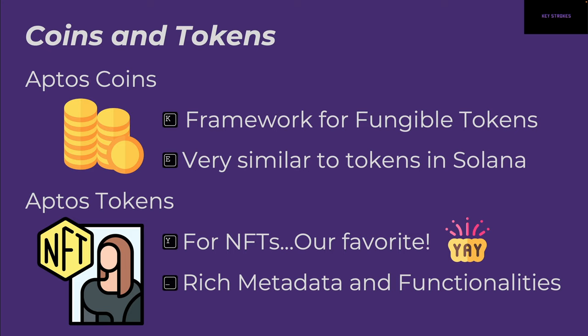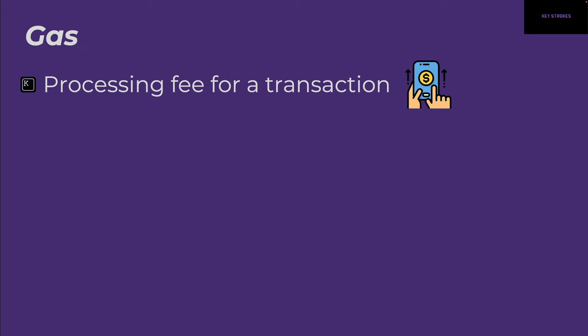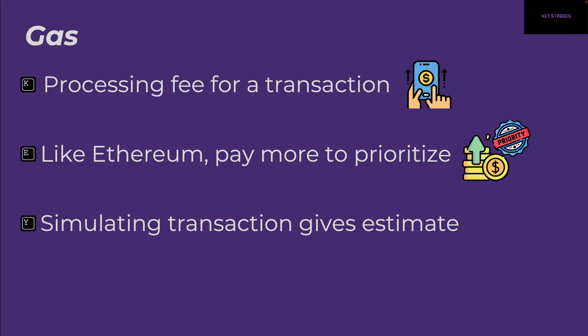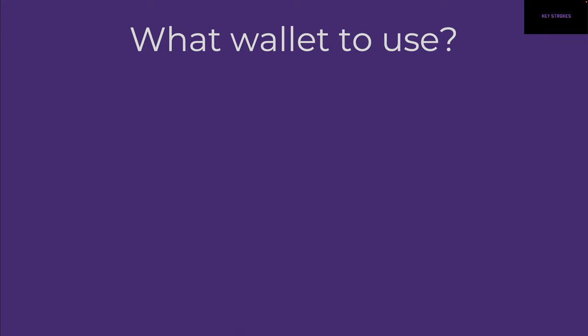Let's talk about gas. Gas is a very common term in blockchain — it's basically a processing fee for a transaction. Aptos blockchain works like Ethereum: you can pay more gas to prioritize your transaction so it gets processed faster. There is some math to determine what the gas cost would be, covered in the documentation, but the easiest way is to just simulate a transaction and you'll get an estimate of the cost.